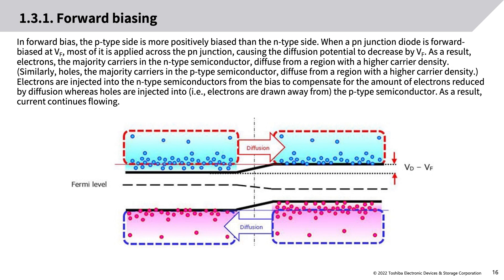In forward bias, the P-type side is more positively biased than the N-type side. When a PN junction diode is forward biased at VF, most of the voltage is applied across the junction, causing the diffusion potential to decrease by VF. As a result, electrons (majority carriers in the N-type semiconductor) diffuse from a region of higher carrier density, and holes (majority carriers in the P-type semiconductor) similarly diffuse. Electrons are injected into the N-type semiconductor from the bias to compensate for diffusion losses, while holes are injected into the P-type semiconductor, allowing current to continue flowing.